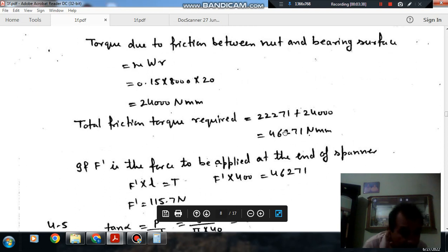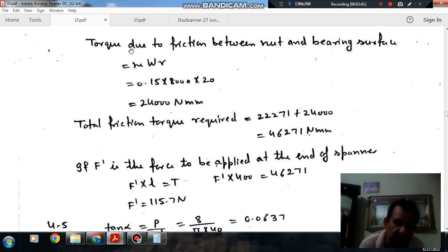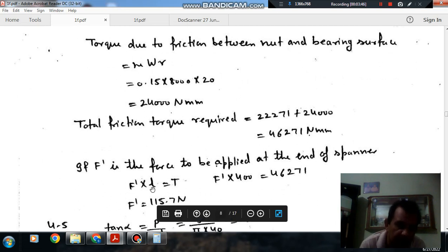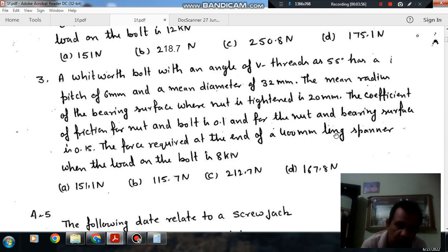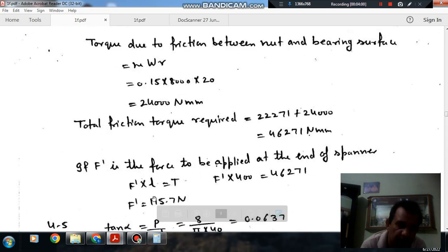Now this is the total torque required. If we apply a spanner of length L to the screw jack, then F dash is the force required to create the same torque. L is given as 400 mm, so the force can be calculated as 115.7 newtons. So answer is B, 115.7 newtons.